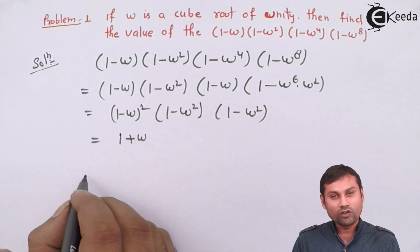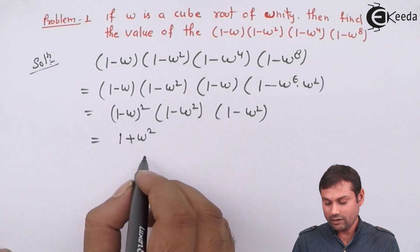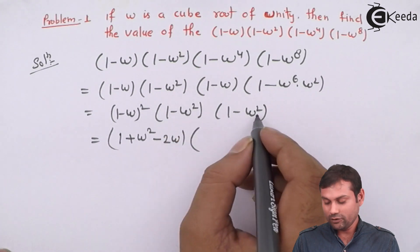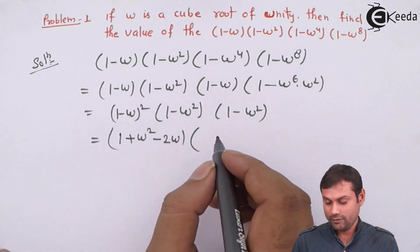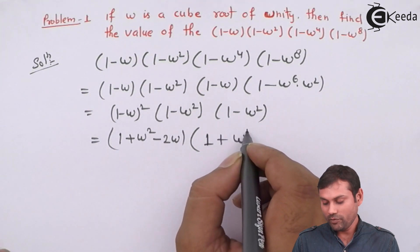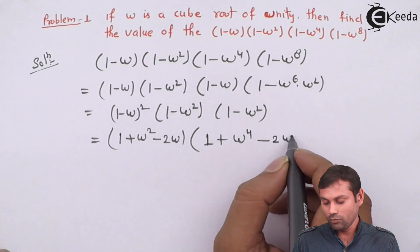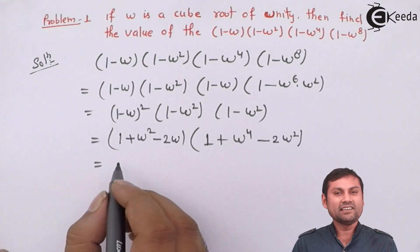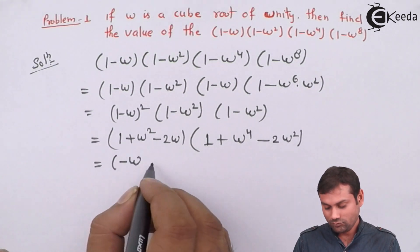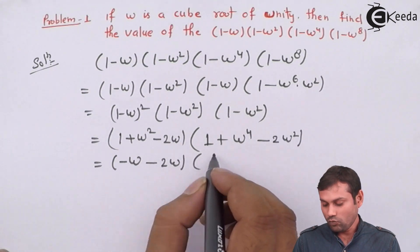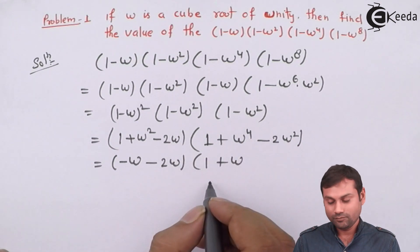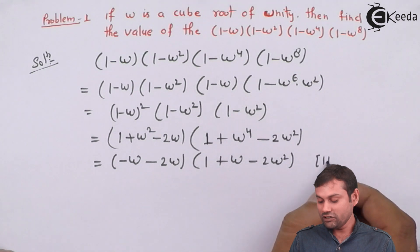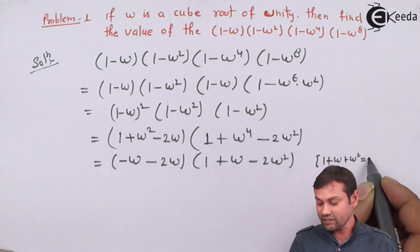Expanding (1-omega) squared gives 1 + omega squared - 2omega. And (1-omega squared) squared gives 1 + omega to the power 4 - 2 omega squared. Now using the property that 1 + omega + omega squared equals 0: we get 1 + omega squared equals minus omega, and 1 + omega to the power 4 equals 1 + omega equals minus omega squared.